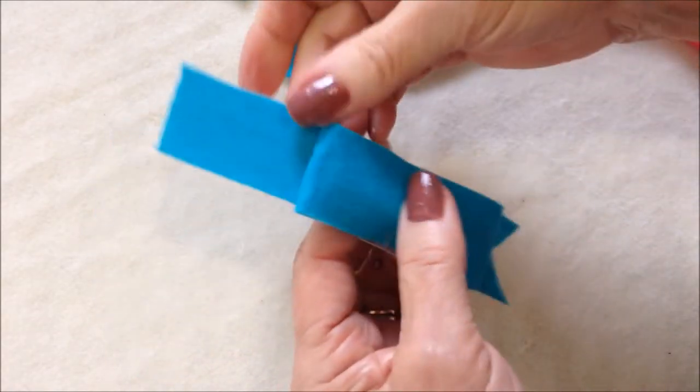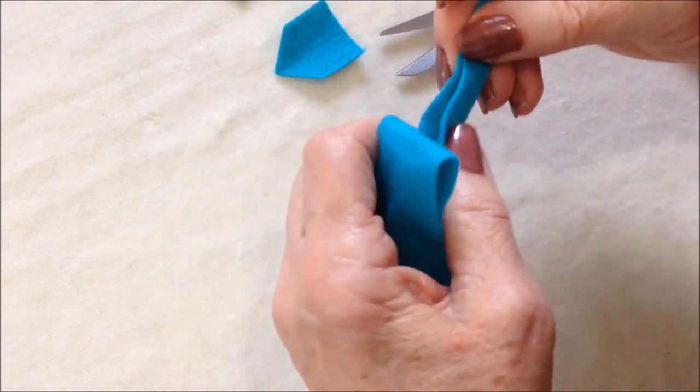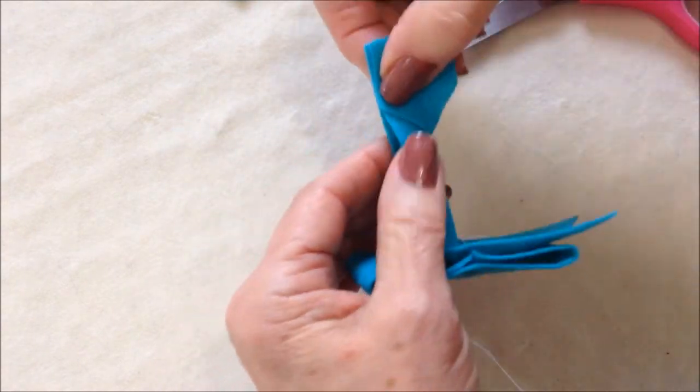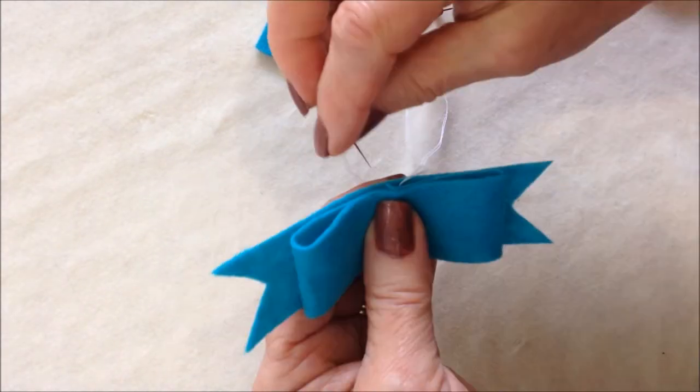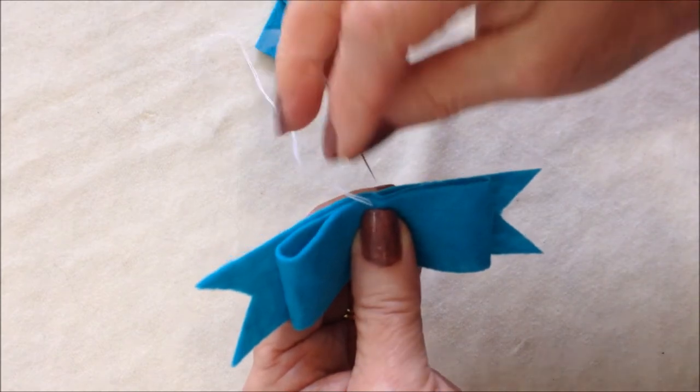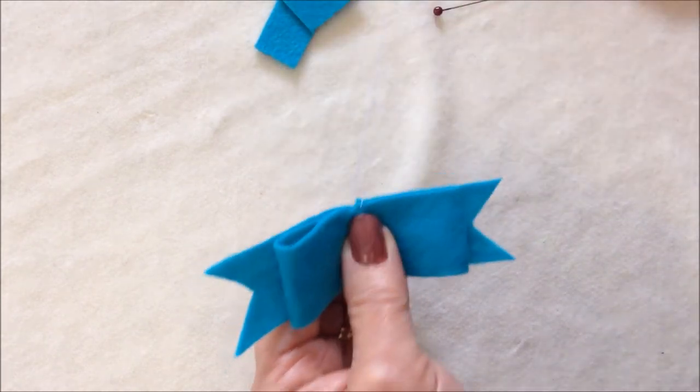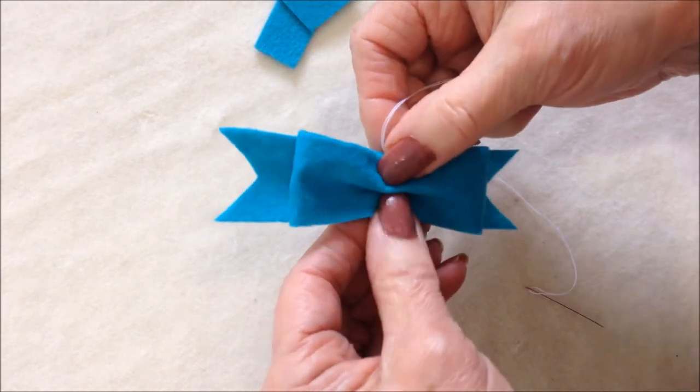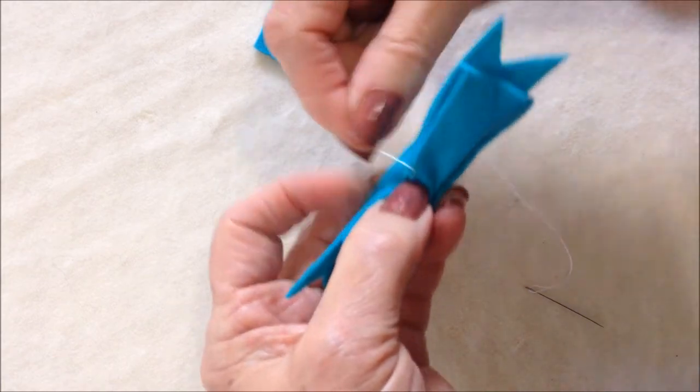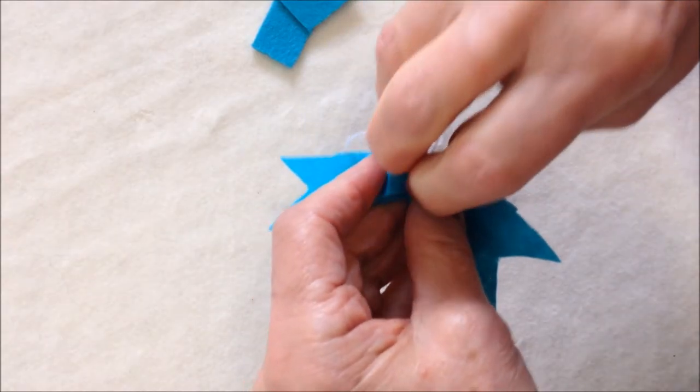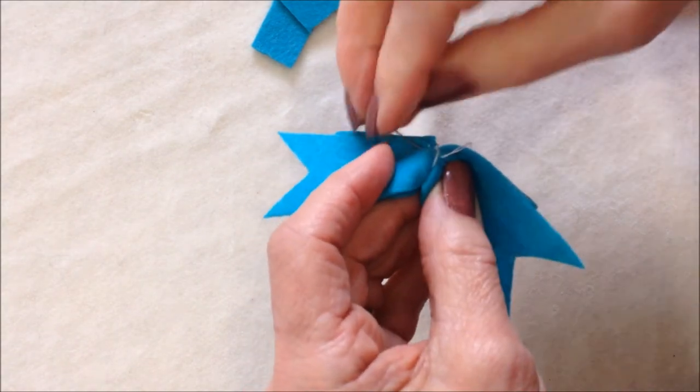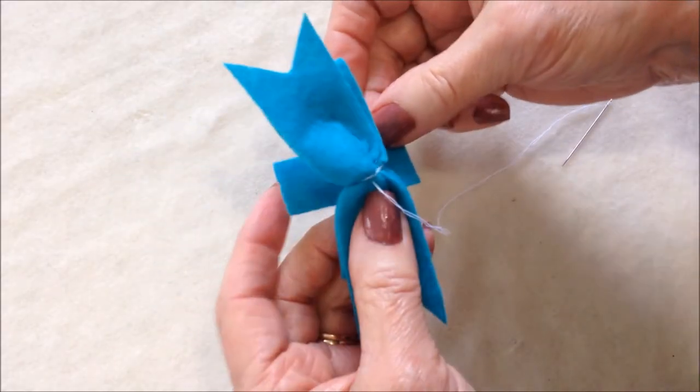So now I can remove my pin, take one stitch here. Now I'm going to fold this over like this, wrap my thread around, take a stitch on the back. Now take the smaller piece.